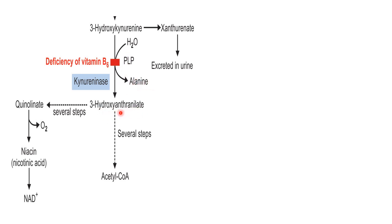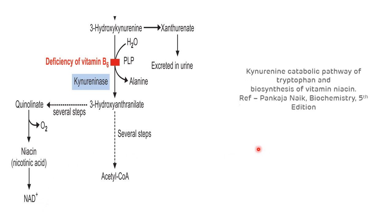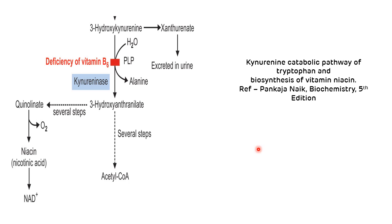With the help of kynurenase enzyme there is synthesis of alanine as well as 3-hydroxy anthranilate. This 3-hydroxy anthranilate either gets converted to acetyl-CoA, leading to the synthesis of ketone bodies, or it gets converted to quinolinate, which is then converted to niacin (vitamin B3). The active form of niacin is NAD+. This is the kynurenine pathway showing synthesis of kynurenine, alanine, acetyl-CoA, and niacin.